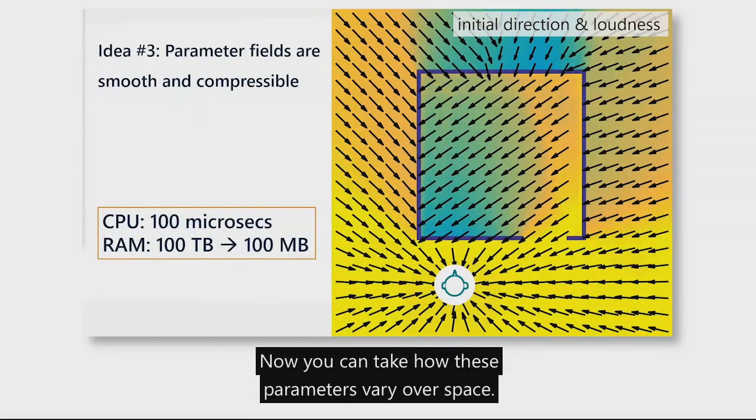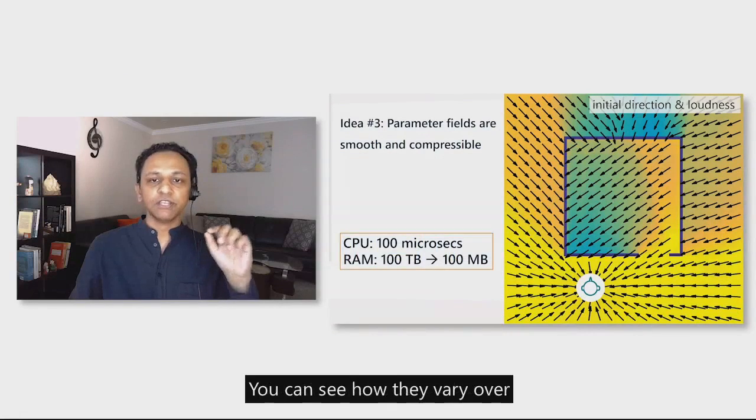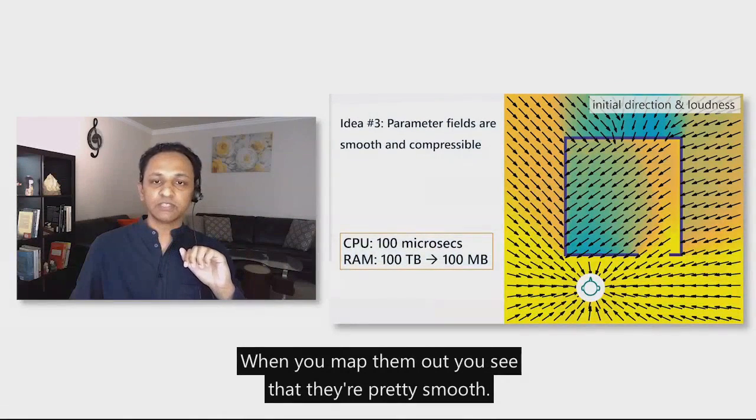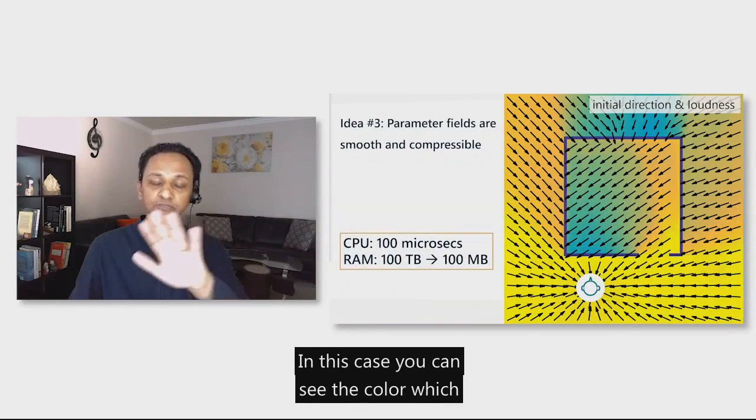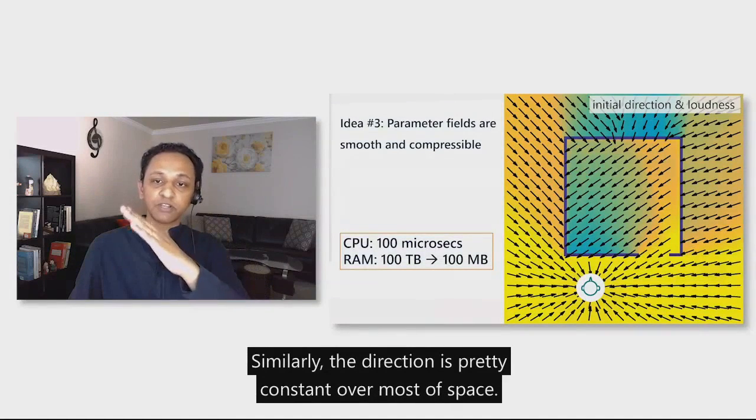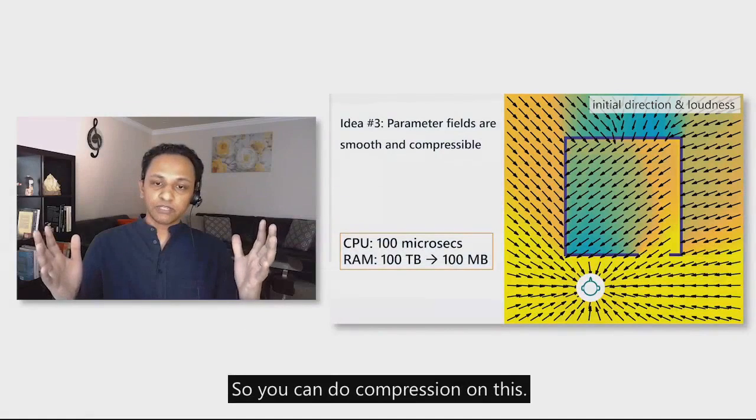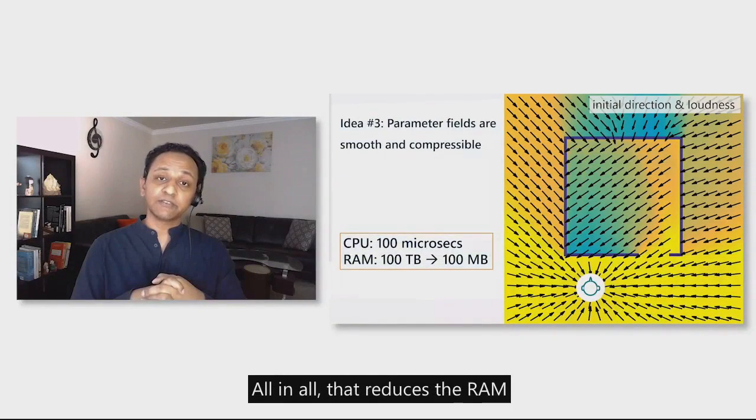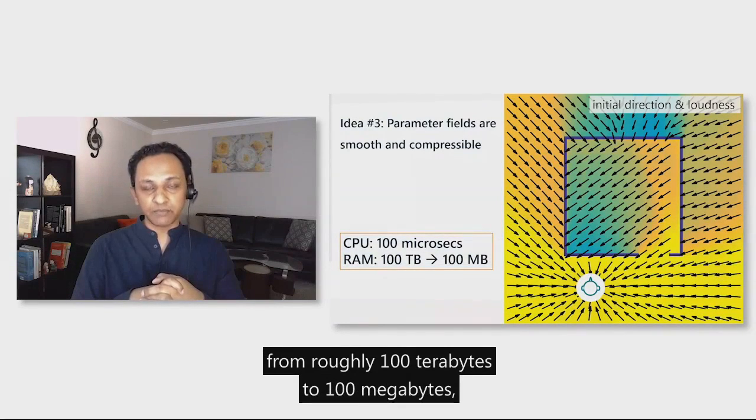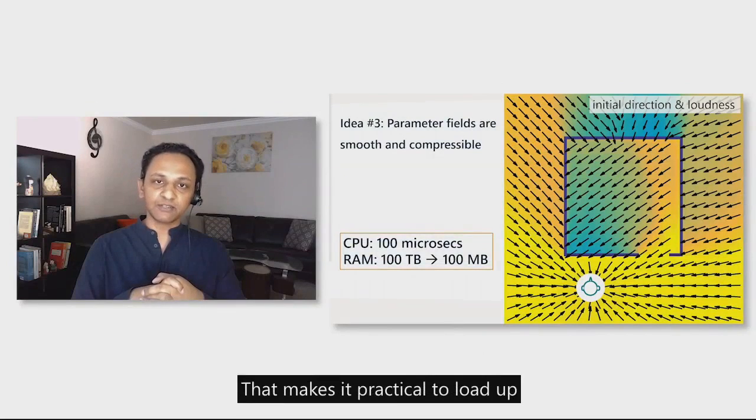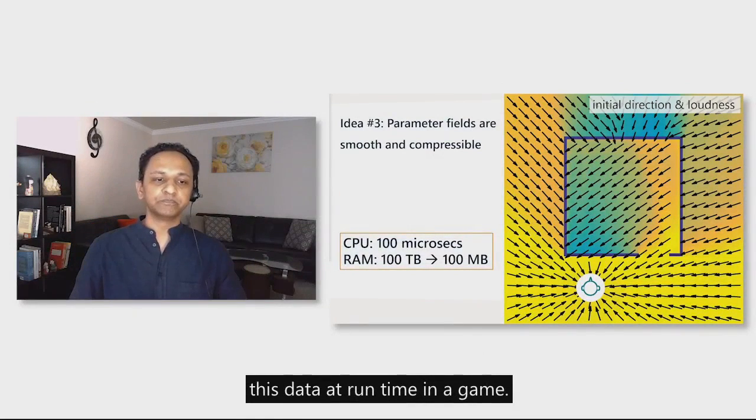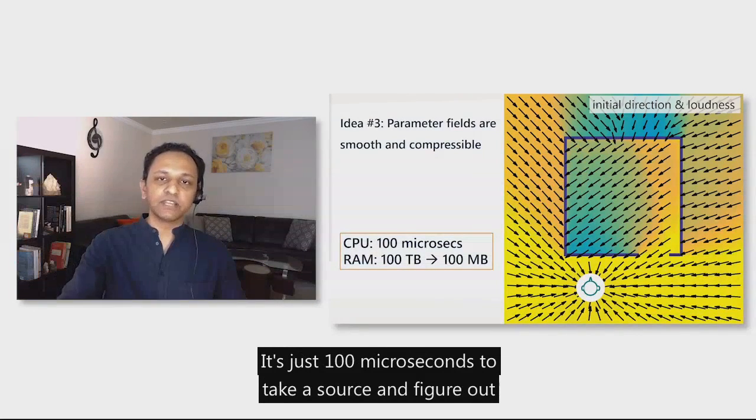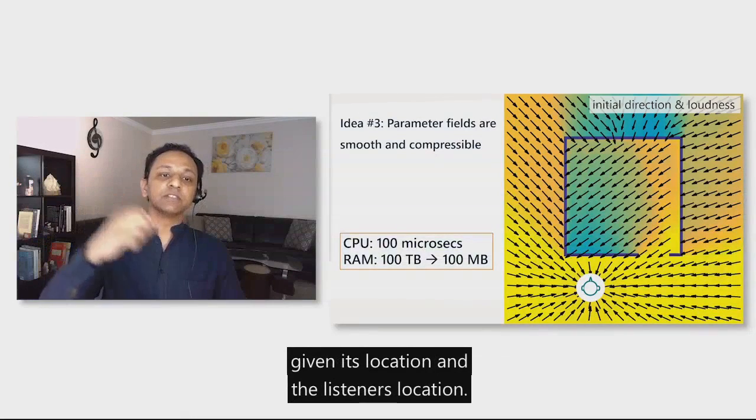That brings us to the third idea. Now, you can take how these parameters vary over space. For example, I've shown initial direction and loudness here. You can see how they vary over space and map out what are called parameter fields. When you map them out, you see that they're pretty smooth. In this case, you can see the color, which is loudness, is varying very smoothly. Similarly, the direction is pretty constant over most of space. So, you can do compression on this. For example, you can use an image compressor on such smooth images and reduce the data. All in all, that reduces the RAM from roughly 100 terabytes to 100 megabytes, which is a factor of a million compression. That makes it practical to load up this data at runtime in a game. The CPU is small because we pre-compute it. It's just table lookups and interpolations at runtime. It's just 100 microseconds to take a source and figure out what its acoustic parameters should be, given its location and the listener's location.